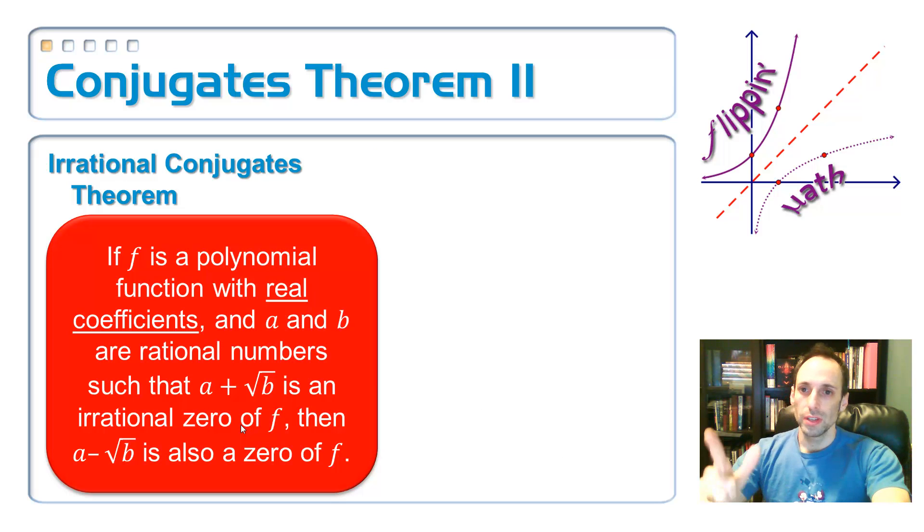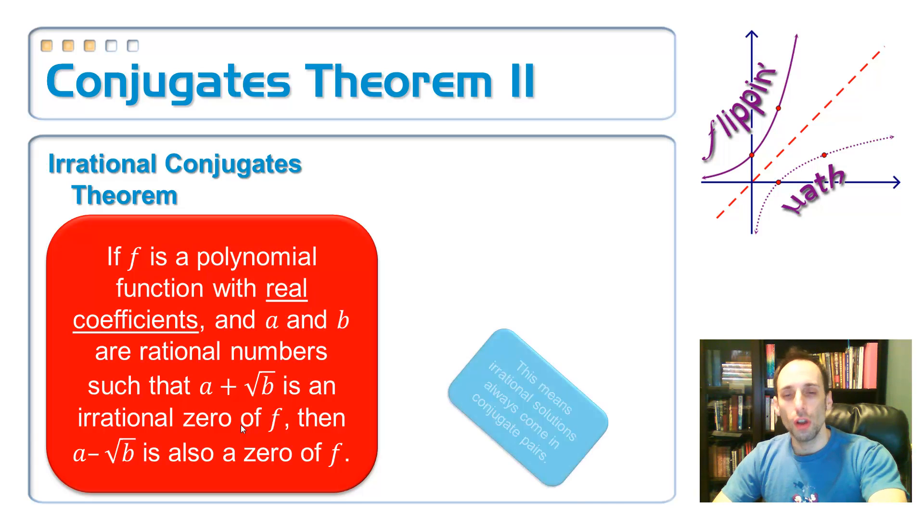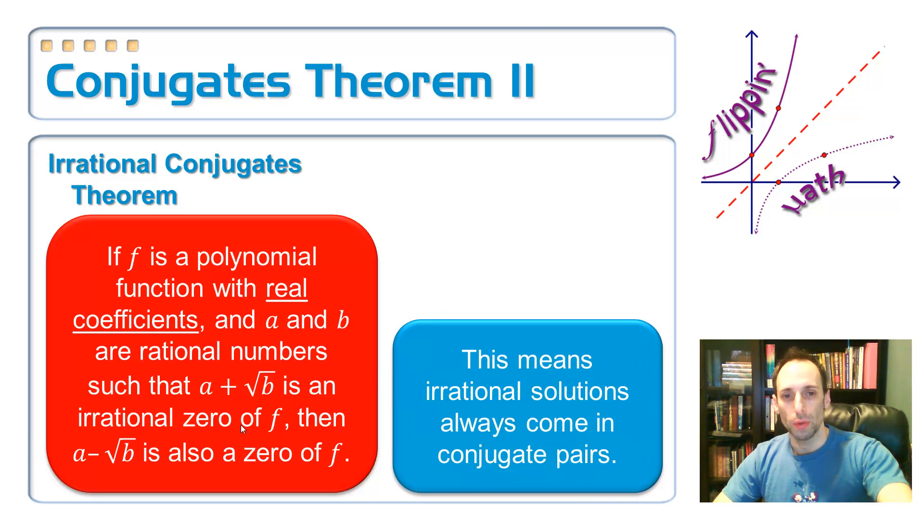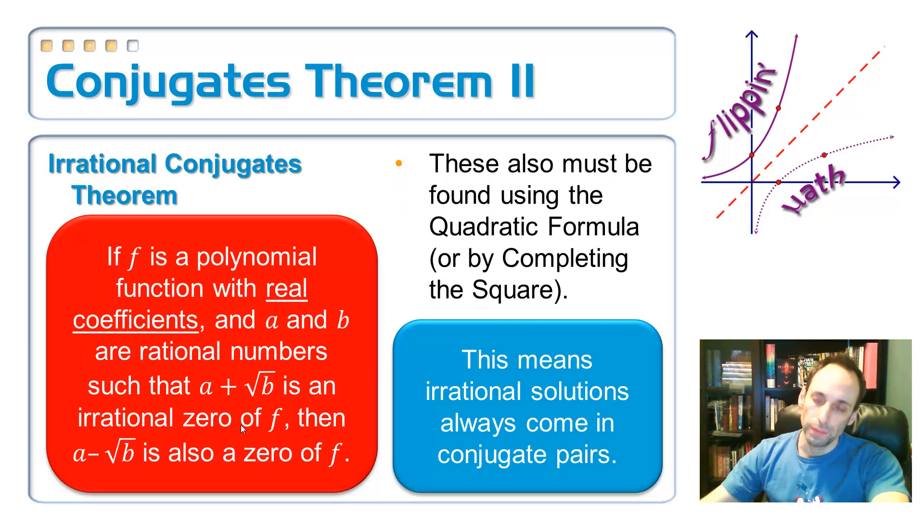So the next one is the irrational theorem, the irrational conjugate theorem. Same setup, polynomial function with real coefficients, only works with real coefficients. Then if you have a plus the square root of b as one solution, you must also have a minus the square root of b. Those things also come in conjugate pairs. So irrational solutions always come in conjugate pairs, always come in twos. And just like before, the only way for us to get them is by using the quadratic formula or by completing the square.